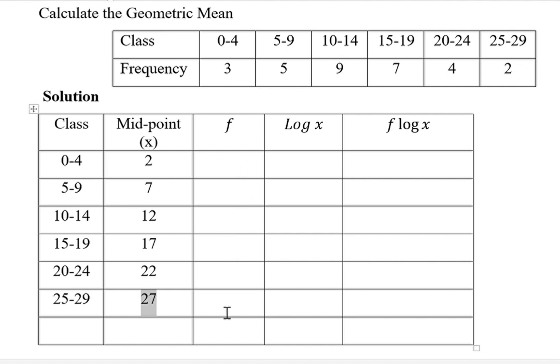For frequency, we don't calculate. We just take these values corresponding to the frequency and list them column wise like that. Then we need this total for this column f. So if you add these values, you will get 30.